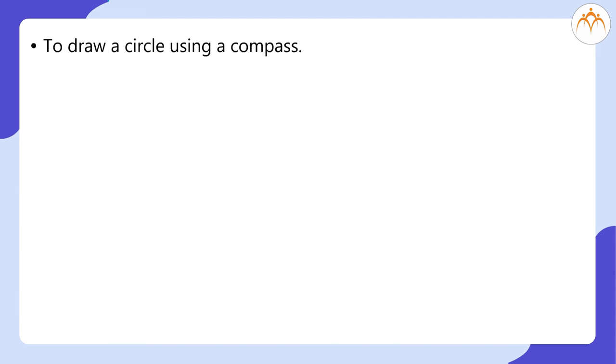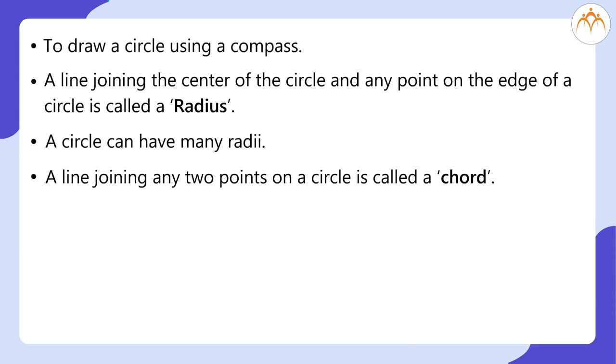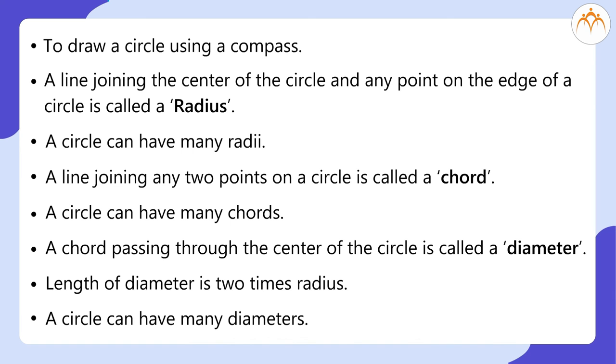What did we learn? To draw a circle using a compass. A line joining the center of the circle and any point on the edge of a circle is called a radius. A circle can have many radii. A line joining any two points on a circle is called a chord. A circle can have many chords. A chord passing through the center of the circle is called a diameter. Length of diameter is two times radius. A circle can have many diameters.